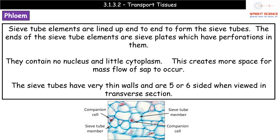Sieve tubes have very thin walls, and when viewed in transverse section under the microscope they appear to be five- or six-sided. You can pick out those sides — counting around gives you five or six — and that's how you identify one of those sieve tubes.